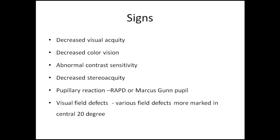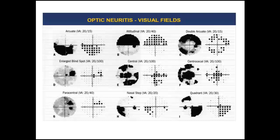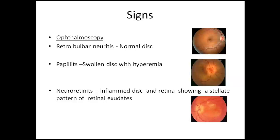Eye pain or neuralgia can only be seen in the initial stage of retrobulbar neuritis, so history taking is very important. Visual field defects in optic neuritis include arcuate defects, altitudinal field defects, double arcuate defects, upper and lower field defects, enlarged blind spot, central vision loss, paracentral vision loss, nasal step, and quadrantic vision loss. In retrobulbar neuritis, the disc, vessels, and macula are normal.